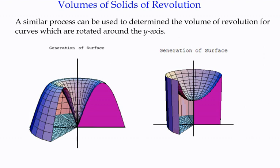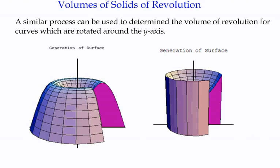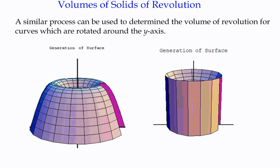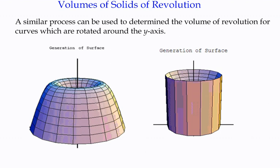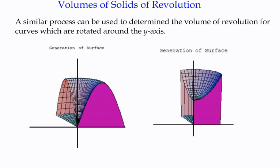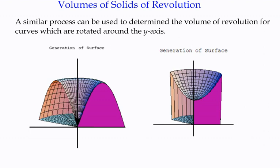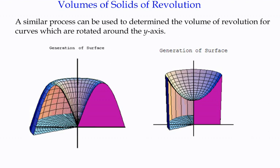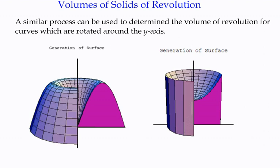We've had a look at volumes of solids of revolution for shapes that rotate around the x-axis. So what we're going to look at here, this is example four in our applications of calculus. We're going to look at what's the approach that we take when we want to rotate a shape around the y-axis. Is it the same principle?